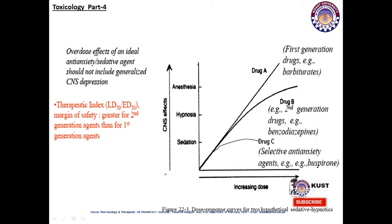CNS depression progresses as follows: first sedation, then hypnosis, anesthesia, respiratory depression, coma, and death. Drug A — first-generation barbiturates — are more potent. Drug B — second-generation benzodiazepines — are less potent compared to barbiturates. Third are selective anti-anxiety agents like buspirone, which have less sedative effect and less CNS depressing effect.